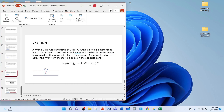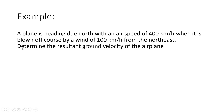In this video, we're going to talk about velocity as vectors. Suppose a plane is heading due north with an airspeed of 400 kilometers an hour. When it's blown off course by a wind of 100 kilometers an hour from the northeast, we want to determine the resultant ground velocity of the airplane.